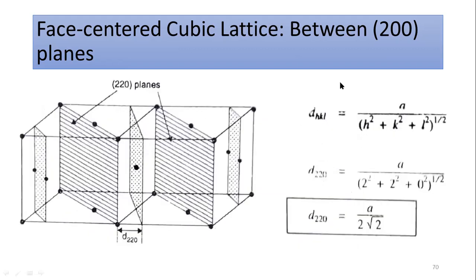The next plane is the (220) plane, shown here for the face-centered cubic lattice. Here h is 2, k is 2, and l is 0. When you put in these values you get 2 squared plus 2 squared, which equals 8 under the root. You can write 8 as 2 squared times 2, so the 2 squared under the root cancels, leaving 2 under root 2 in the denominator. This gives the d-spacing for the (220) plane.